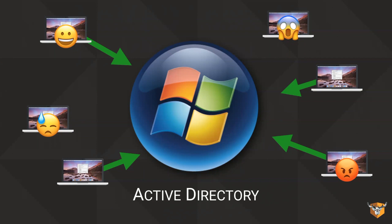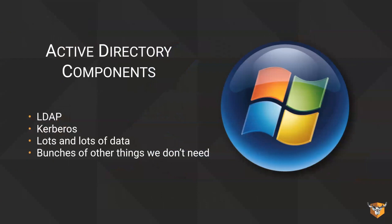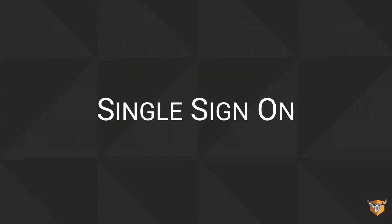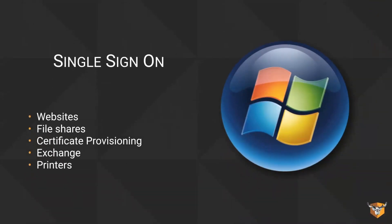So it's kind of sometimes a mess. Active Directory has a whole bunch of bits and pieces — LDAP and Kerberos are the main two. There's lots of data inside there, lots of things it does that we don't necessarily need all the time. What we really want is single sign-on for our users: type in a username and password and have access to the services they need — websites, file shares — without having to type credentials over and over again.